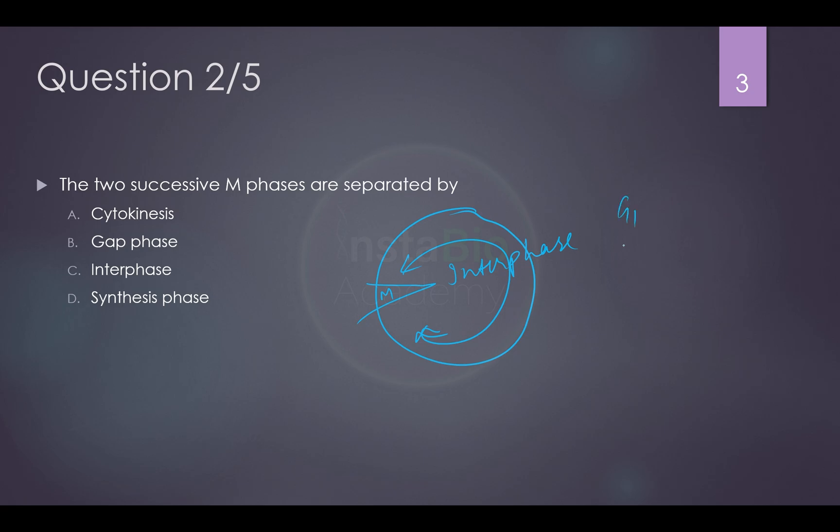And as we have seen in the previous, this is comprising of three components, G1, S, and G2. G stands for gap, and S stands for synthesis. So two successive M phases are separated by interphase. The best answer is interphase. Let's move on to the next one.